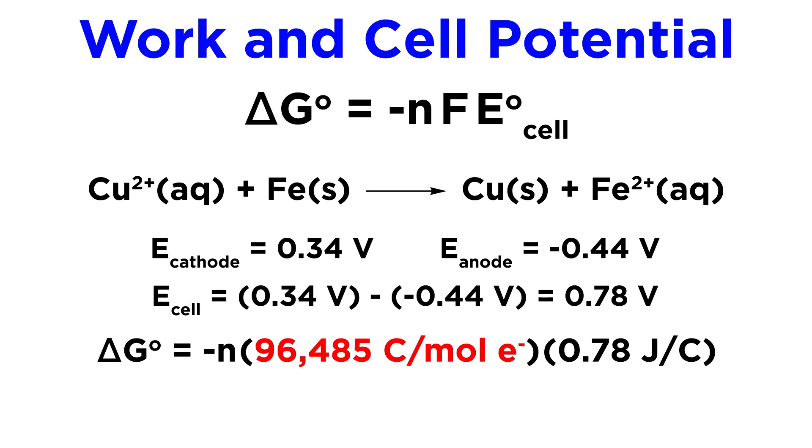That goes in the equation along with Faraday's constant, and also 2 for moles of electrons, because two electrons are being transferred for every copper ion. Doing the math we get negative 1.5 times 10 to the 5 joules.